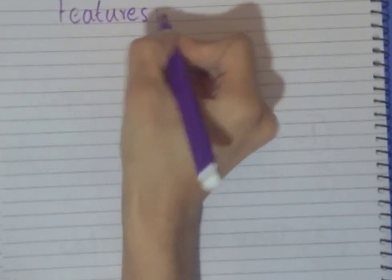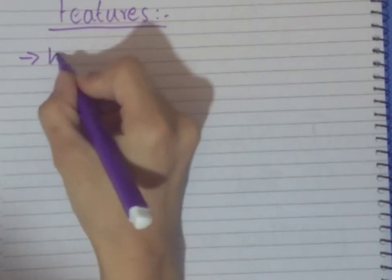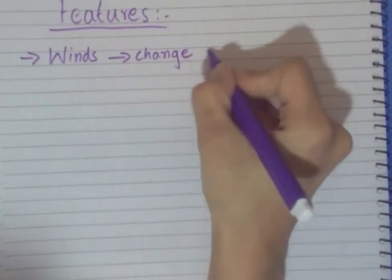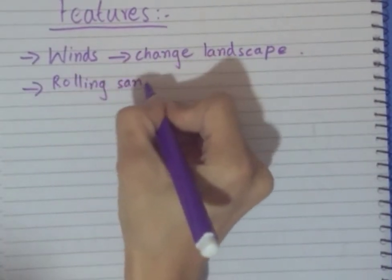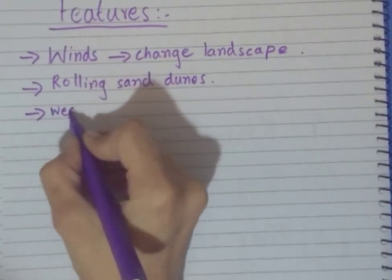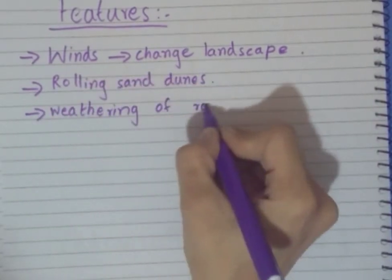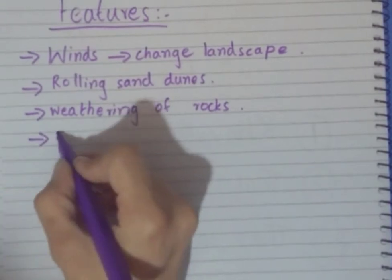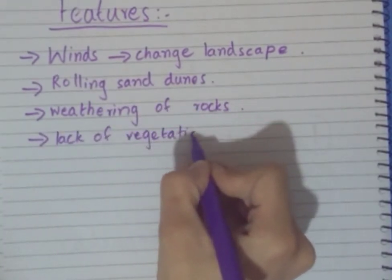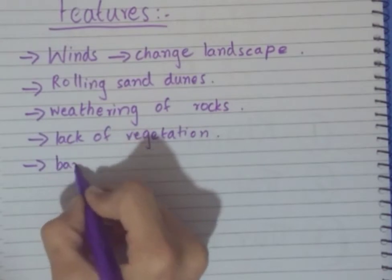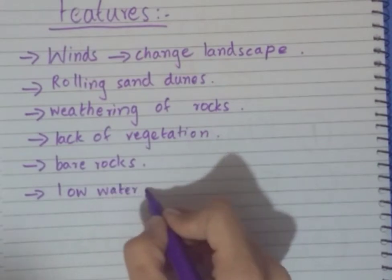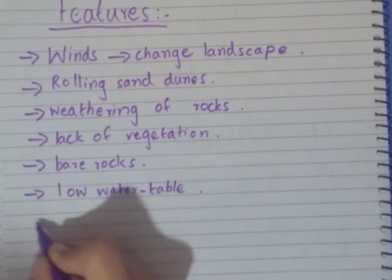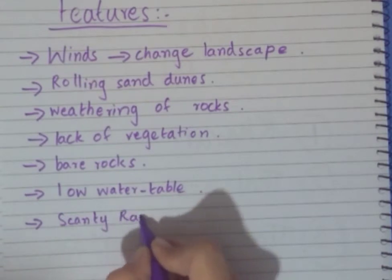Moving on to the features of the desert area — the main feature is winds, which constantly keep blowing and are responsible for changes in the landscape. The most dominant visible feature is rolling sand dunes. There is also weathering of rocks, meaning the breakage and wear and tear of rocks due to wind action. There is a lack of vegetation, which leads to mostly bare rocks, and the water table is usually low because of scanty rainfall.